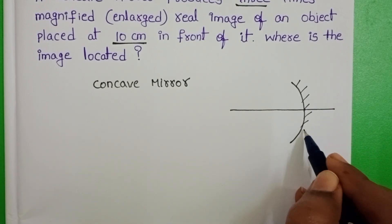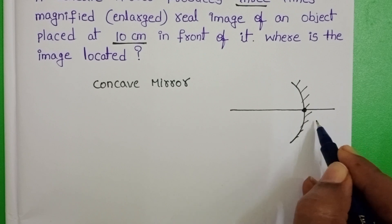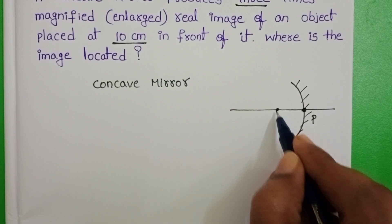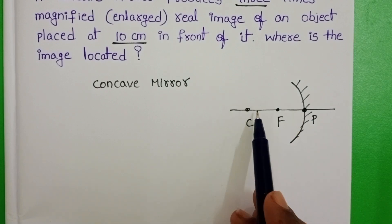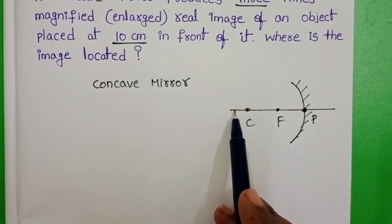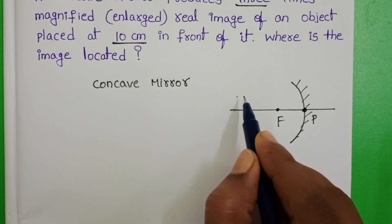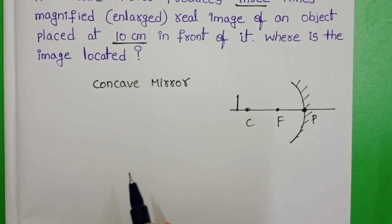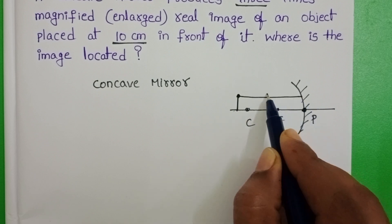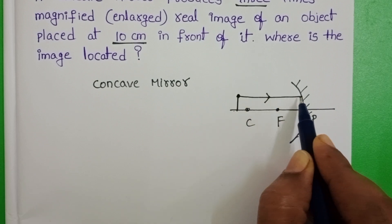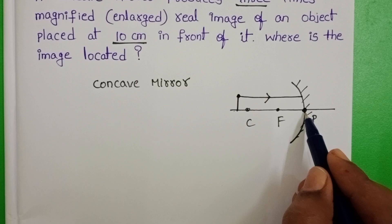Let us draw the concave mirror, pole, focus, center of curvature. When object is placed in front of the concave mirror, let us take this is the position of the object. A light ray coming from the object incident on the mirror. This is the direction of the incident ray. This is pole.